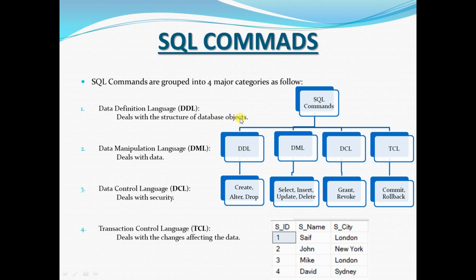When working with the structure of a table — for example if you want to create a table, drop a table, or make changes to the table definition — you use DDL commands. To create a table, use the CREATE command. To make changes to an existing table, such as adding or dropping a column, use the ALTER command. To delete an entire table, use the DROP command. DDL works with the structure of database objects.